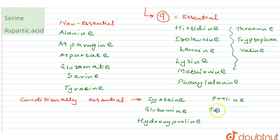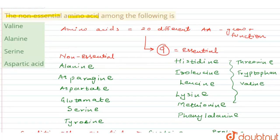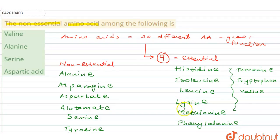And tau. So as per whatever has given in this content: valine, where did you see valine? It's in the essential one. Alanine non-essential, serine is again a non-essential, and aspartic acid - so aspartic acid is again a part of your non-essential ones.